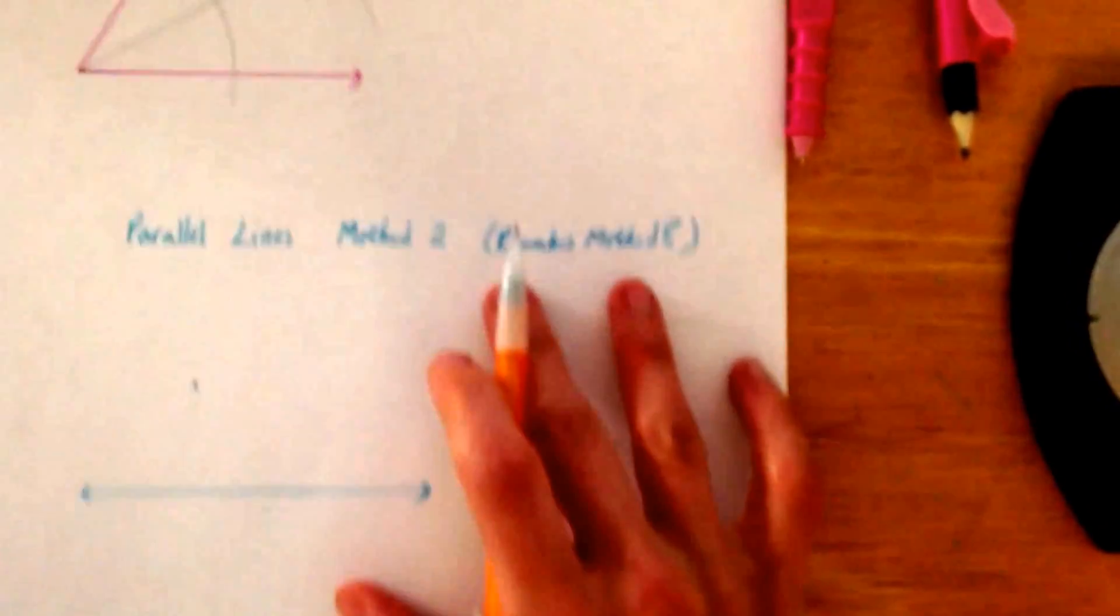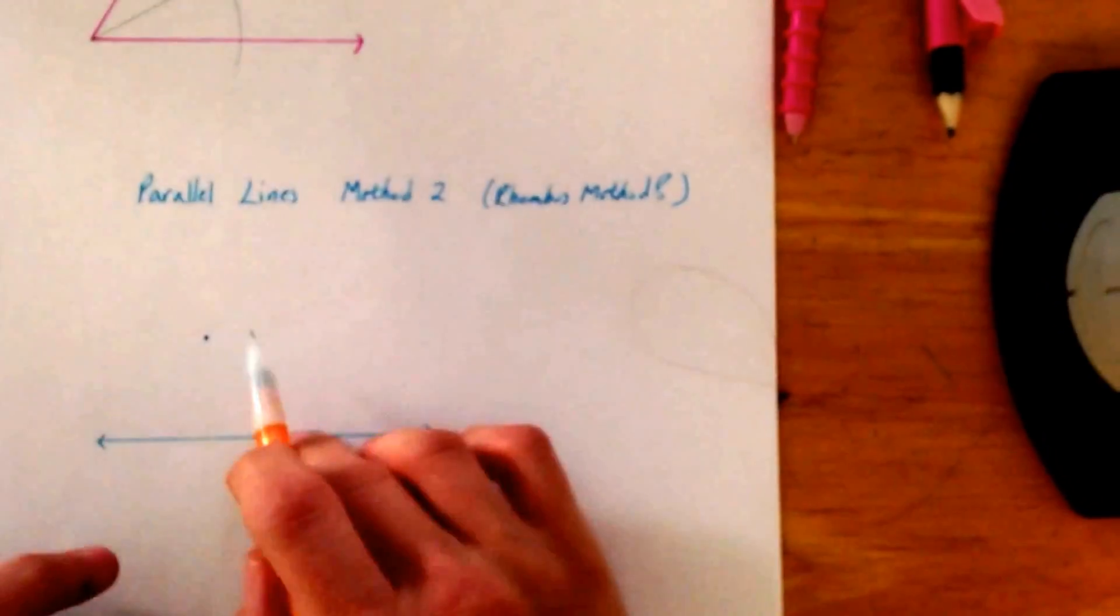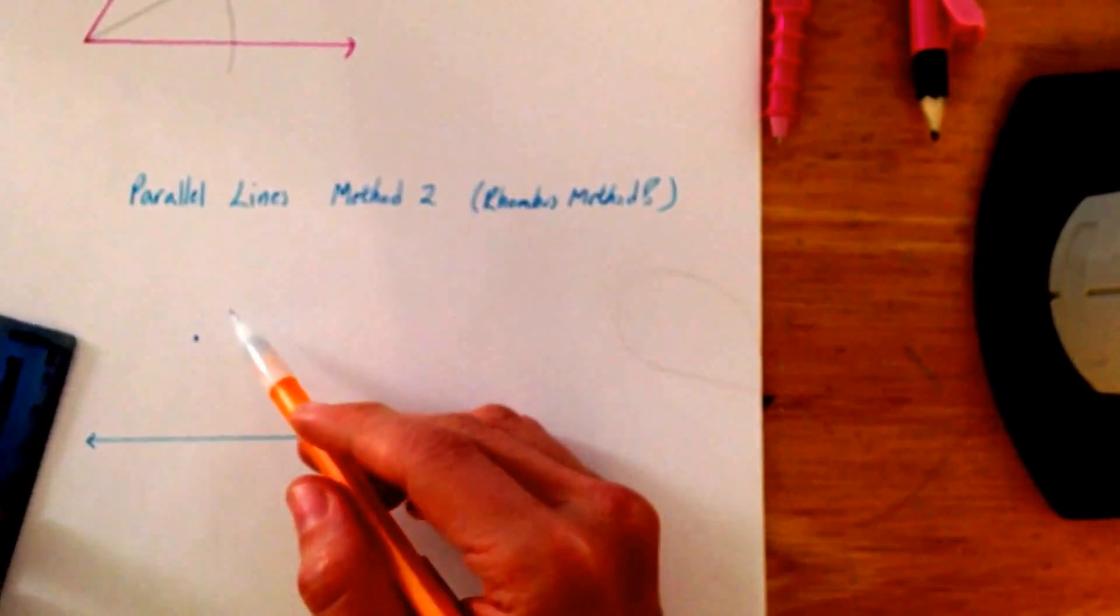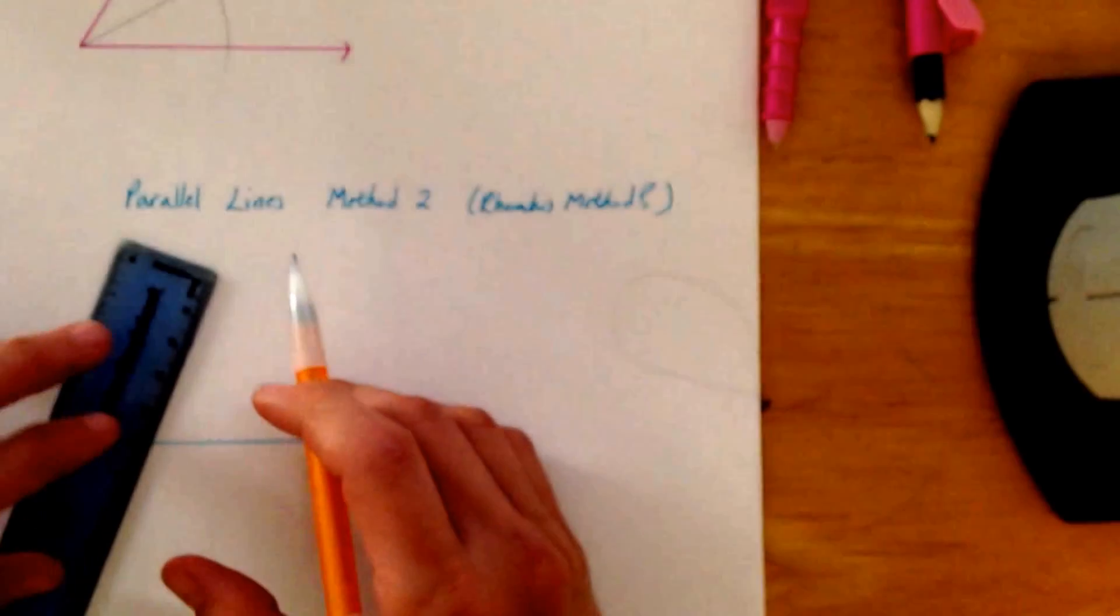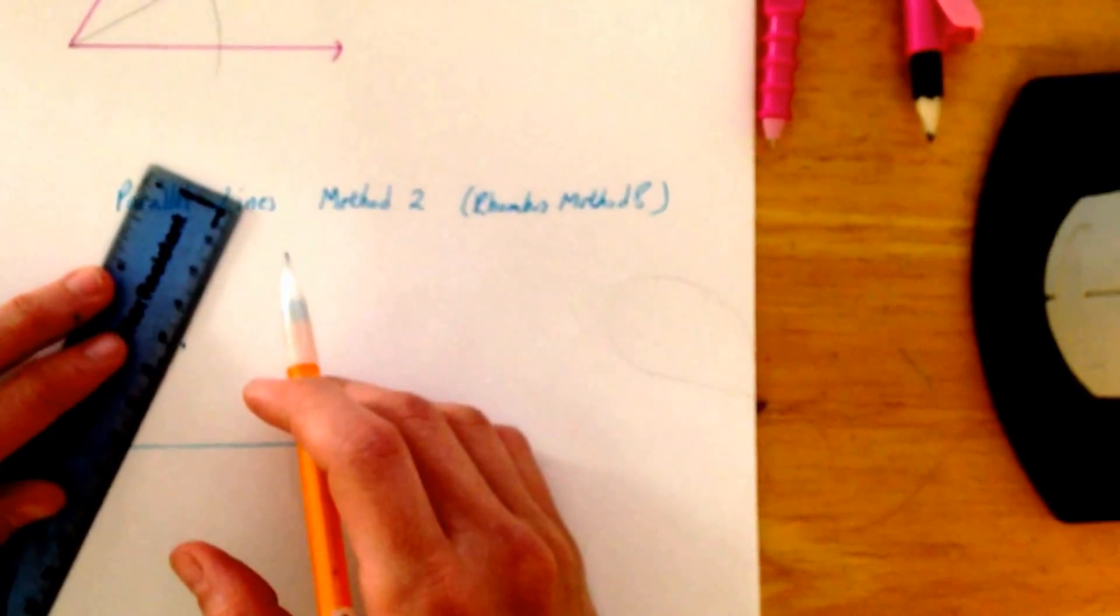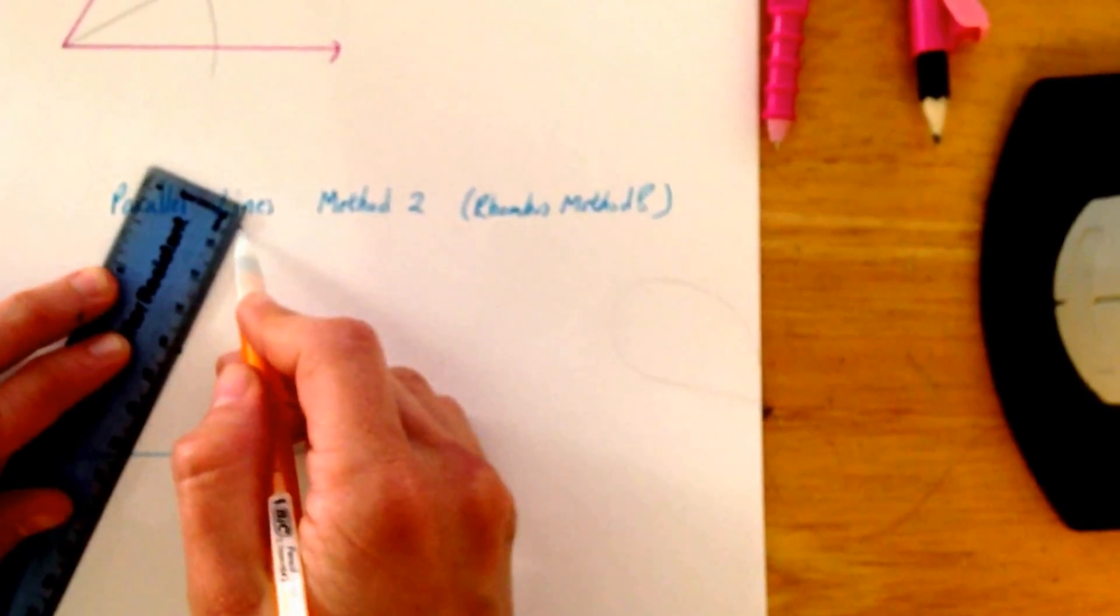So, another way to do parallel lines, before we learned how to do it by doing a congruent angle, you can also do it from bisecting an angle. So, it's nothing new. You're going to create your own transversal, wherever you want,